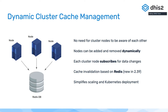This is very helpful, especially in orchestration frameworks like Kubernetes, where you don't really want to touch or even know about the other members of the cluster. We're now using Redis, which is a mostly in-memory database, to store what we call the cache invalidation messages that are being passed between the nodes.